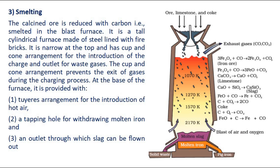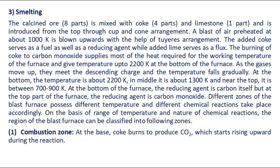An outlet through which slag can be flown out. The calcined ore, eight parts, is mixed with coke, four parts, and limestone, one part, and is introduced from the top through cup and cone arrangement. A blast of air preheated at about 1000 Kelvin is blown upwards with the help of tuyeres arrangement. The added coke serves as a fuel as well as a reducing agent while added lime serves as a flux. The burning of coke to carbon monoxide supplies most of the heat required, giving temperature up to 2200 Kelvin at the bottom of the furnace.